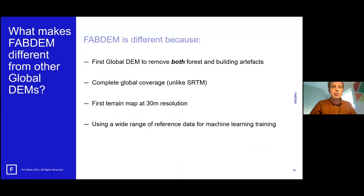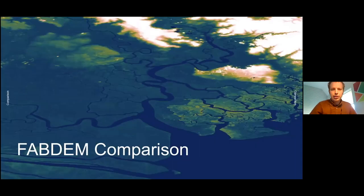FAB DEM is different because it's the first global DEM to remove both forest and building artifacts. It has complete global coverage unlike SRTM, provides the first terrain map at 30-meter resolution, and uses a wide range of reference data for machine learning training. Due to James being unavailable — his wife has just gone into labor — I'll cover the FAB DEM comparison section.